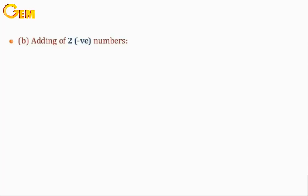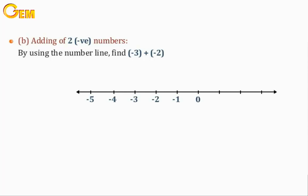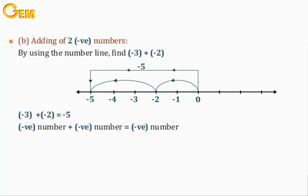B. Adding two negative numbers. By using the number line, find negative 3 plus negative 2. Move from 0 to the left three steps, then move another two steps to the left. The answer will be negative 5. A negative number plus a negative number equals a negative number.